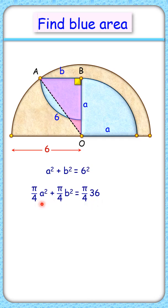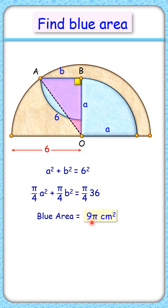The first term in this equation is the area of the first quadrant, and the second term is the area of the left quadrant. The total blue area is 9π centimeters squared, and that's our answer.